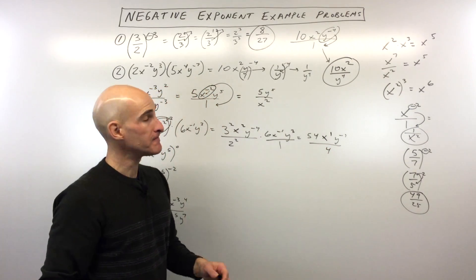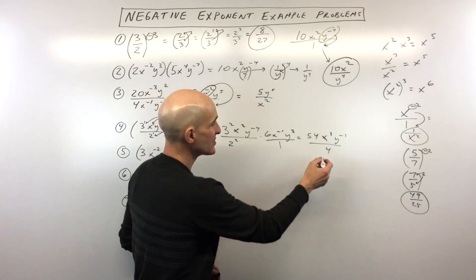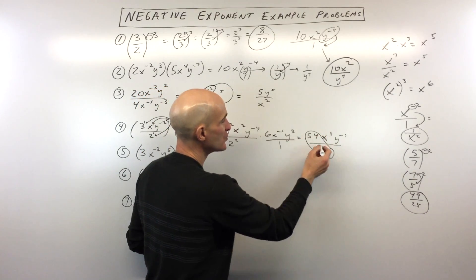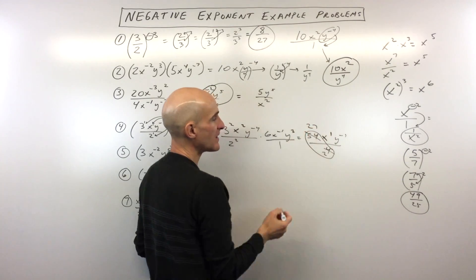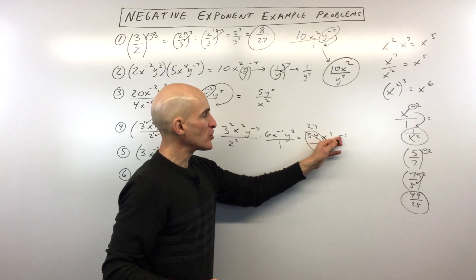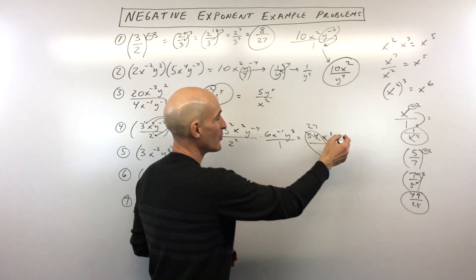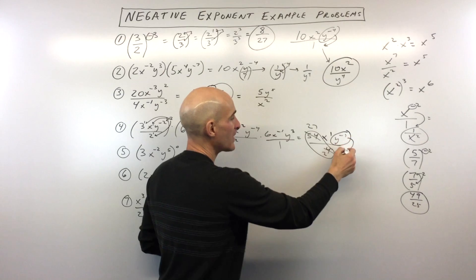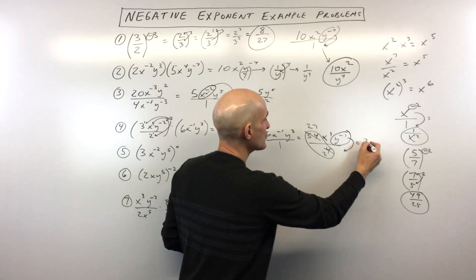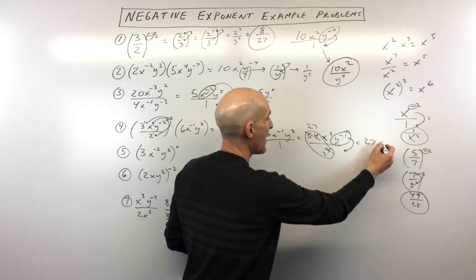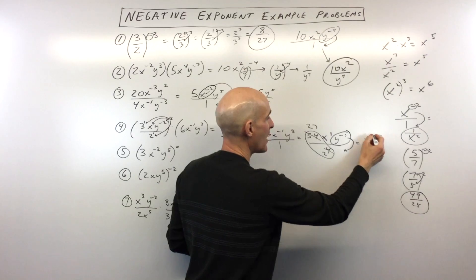We're getting closer. When you see this fraction, you can reduce it — treat it just like a normal fraction. 2 goes into 54 twenty-seven times, 2 goes into 4 twice. We've got this negative exponent, so we move that quantity to the other side of the fraction bar and make it positive. Our final result is 27x over 2y.